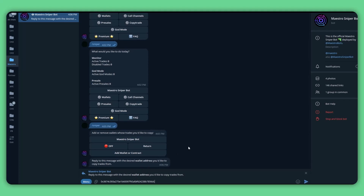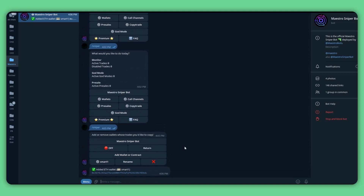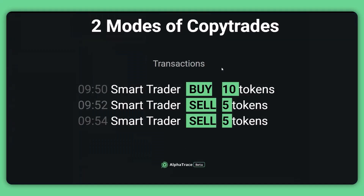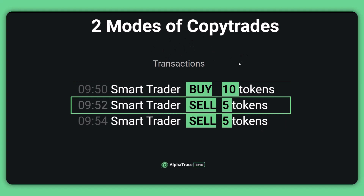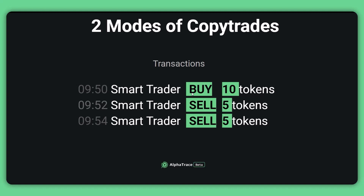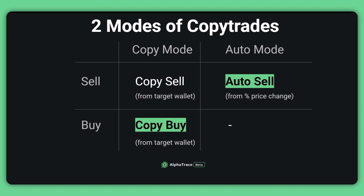Next, put the wallet address that you want to copy trade into the chat. If you've done it correctly, the bot will tell you the wallet has been successfully added, with the wallet name shown at the bottom left of the command box. After adding the target wallet, you will need to set up the trading settings to execute the copy trading. In this video we will explain the basic two modes. For example, on 9:50 this smart trader bought a certain token for 10 units, then sold five after two minutes and another five after four minutes.